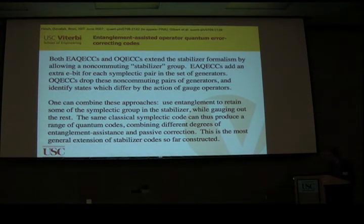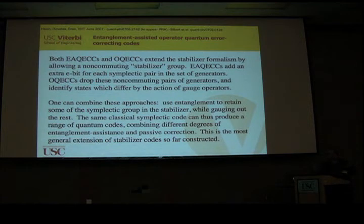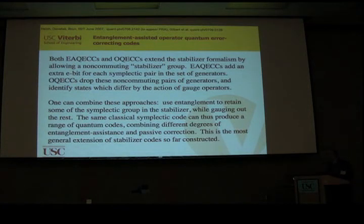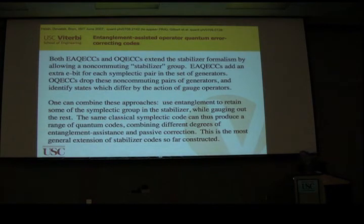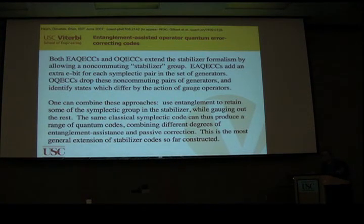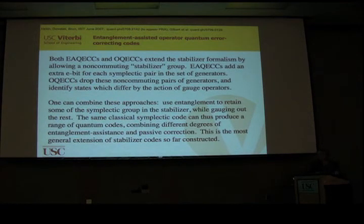Both entanglement-assisted quantum error correcting codes and operator quantum error correcting codes are extensions of the stabilizer formalism — both allow you to have a non-commuting stabilizer, in quotes. They get around this in different ways. Entanglement-assisted codes add an extra ebit for each symplectic pair in the set of generators and enlarge the operators to make them commute. Operator quantum error correcting codes drop the non-commuting pairs and consider them to be acting only on the gauge subsystem. If you have a symplectic subgroup with more than one pair, you could combine these approaches.